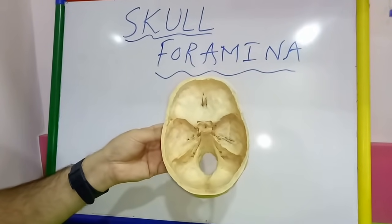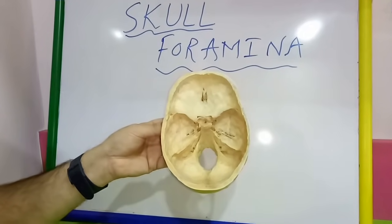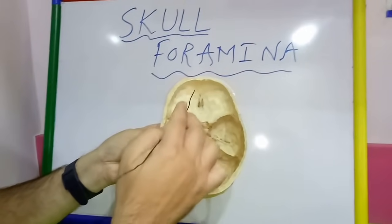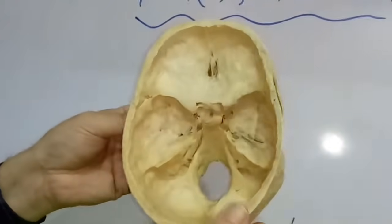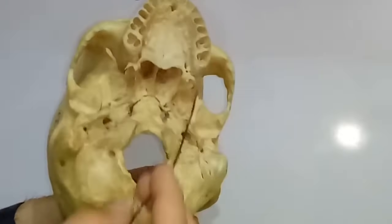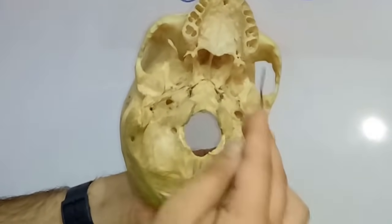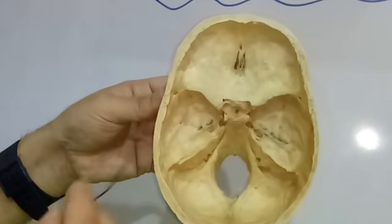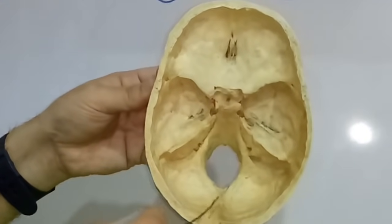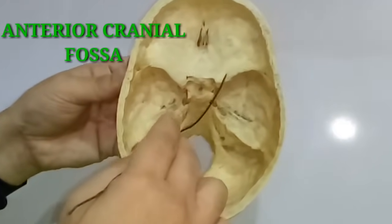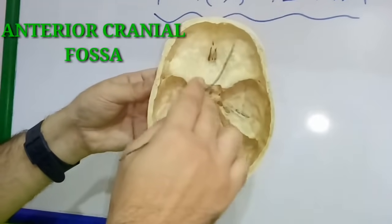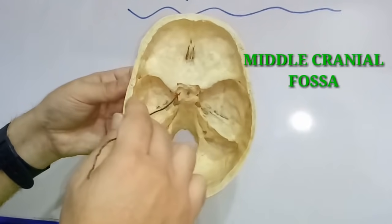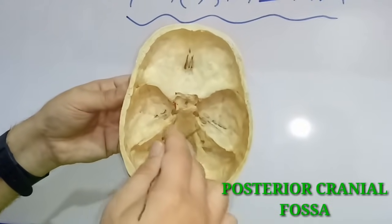Hello everyone. In this session I will demonstrate the various foramina in the skull. These foramina are seen from the interior of the cranial cavity and also from the basal view of the skull, i.e. the norma basalis. The interior of the cranial cavity is divided into three fossae: the anterior cranial fossa, the middle cranial fossa, and the posterior cranial fossa.